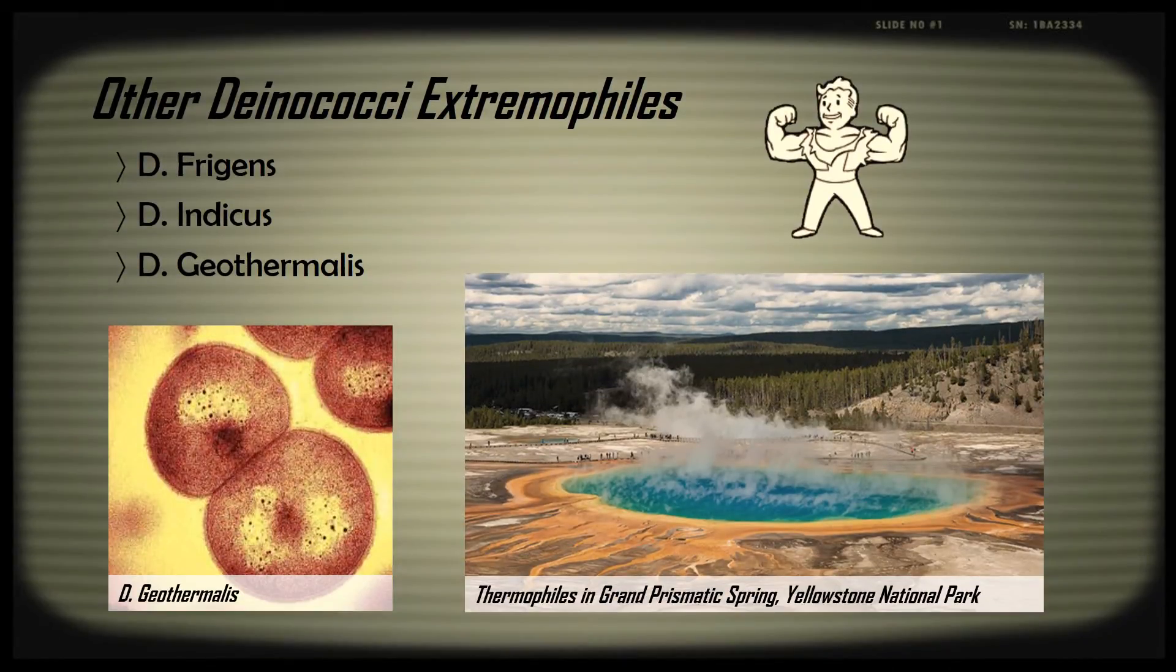Some other extremophiles in the Deinococcus family include D. frigens, which can withstand low temperature, drought, and UV resistance. It was also first discovered in Antarctica.